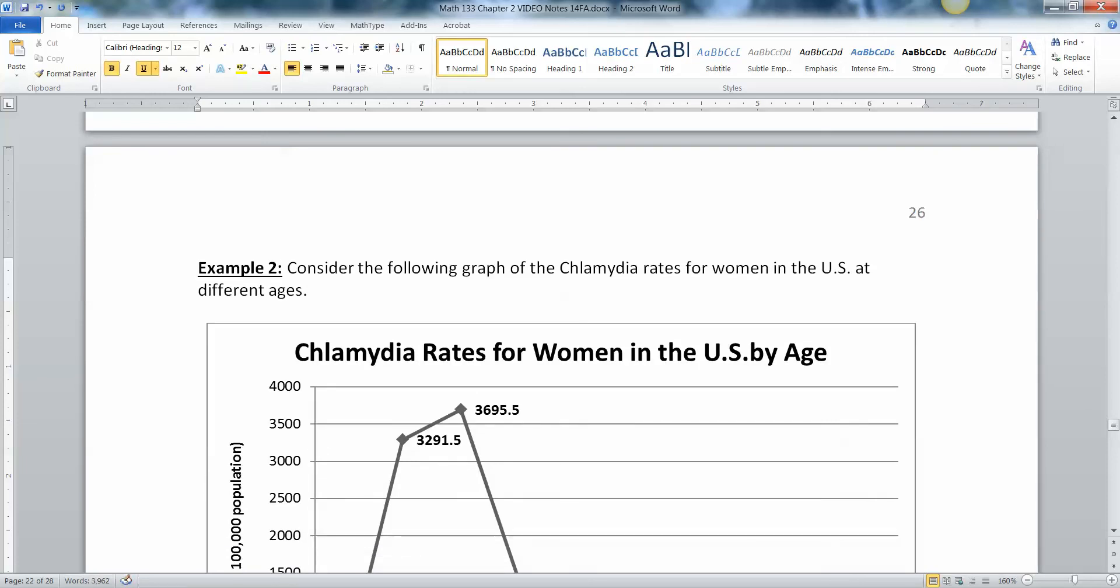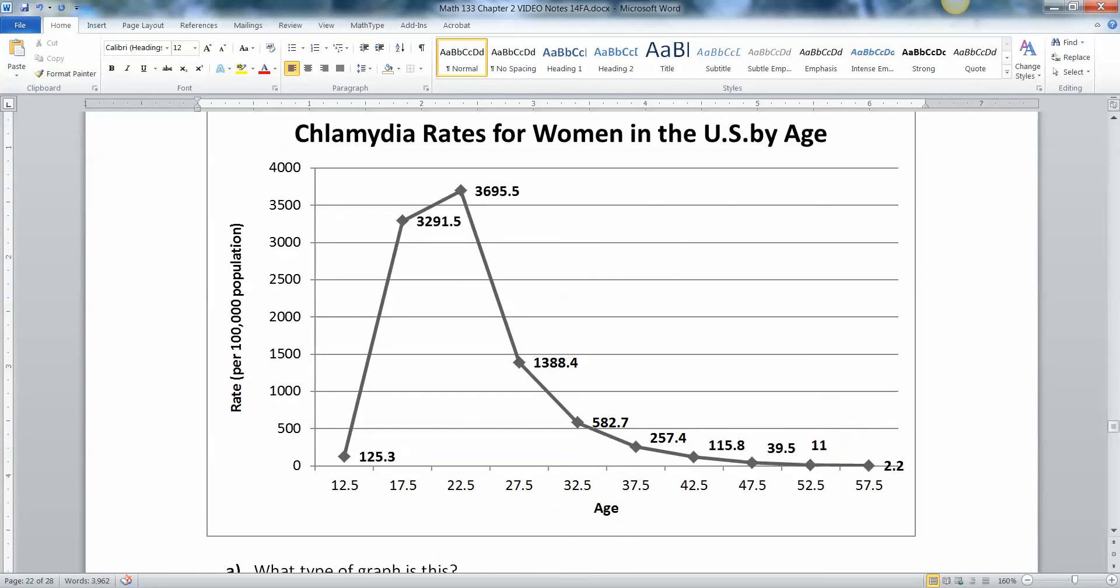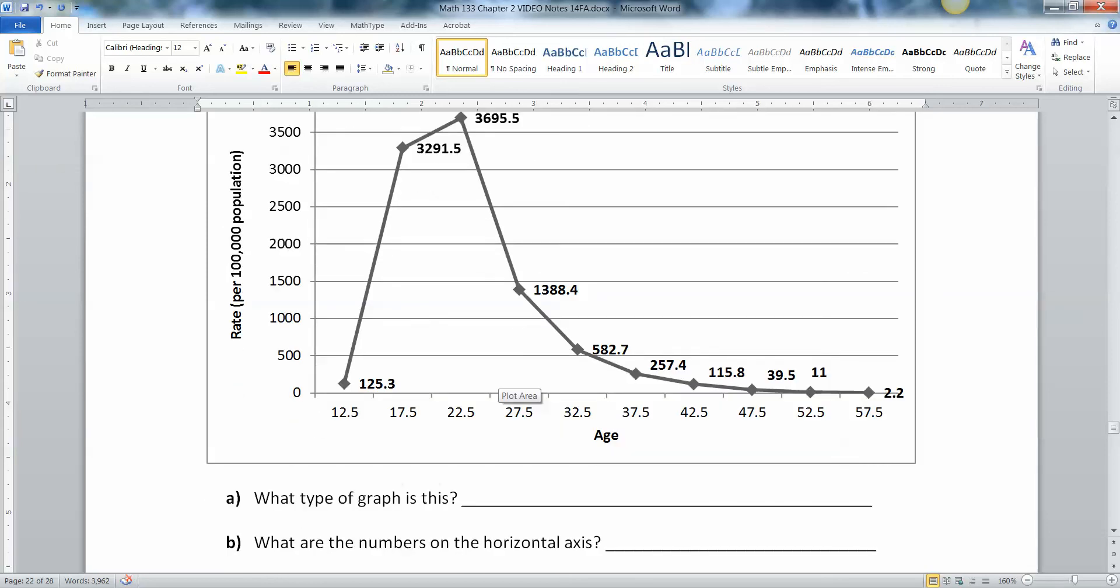So considering the following graph of the chlamydia rates for women in the U.S. at different ages. Okay. So here we have the chlamydia rates for women in the U.S. by age. So here are their ages down here, and here's their rate up here. Okay. So what type of graph is this? Well, it's close. It's basically a frequency polygon.